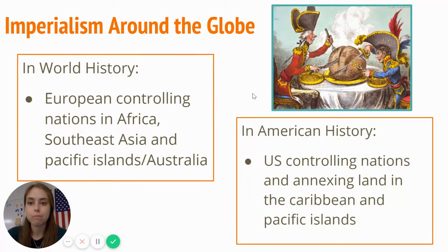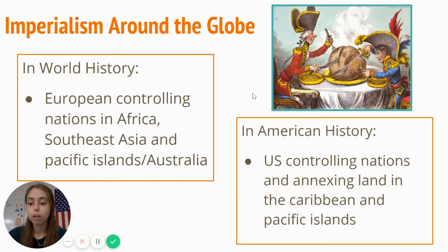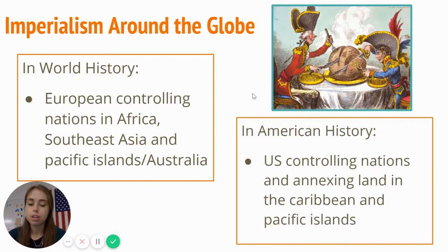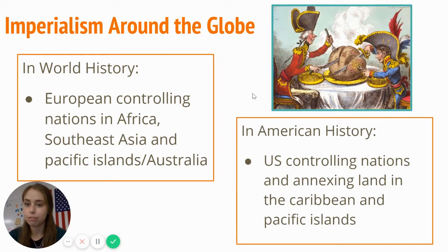Imperialism is a term you will hear in a lot of different historical contexts — it's a really big topic in world history. In world history, you would learn about mostly European countries, Great Britain in particular, going out and controlling nations in places like Africa, Southeast Asia, the Pacific Islands, and Australia. In U.S. history, it's the same idea of going out around the globe exerting power, but the areas we're focusing on are the Caribbean and the Pacific — more on smaller islands than on big countries like in Africa.